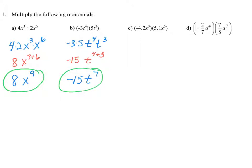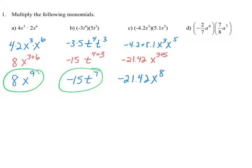In part c, we multiply the two monomials by multiplying the coefficients negative 4.2 times 5.1, and then the variables x to the third times x to the fifth. Negative 4.2 times 4.1 is negative 21.42, and x to the third times x to the fifth is x to the 3 plus 5 exponent.